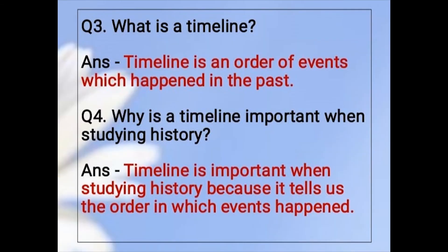Question number 3: What is a timeline? Answer: A timeline is an order of events which happened in the past.